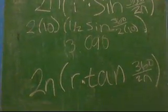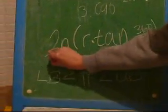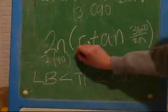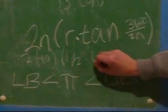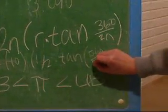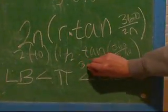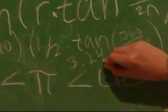Then, to do the circumscribed, which is the upper bound, we plugged in 10 into the equation, and 1 half for the radius, and 360 over 2 times 10. And for that, you get 3.249.